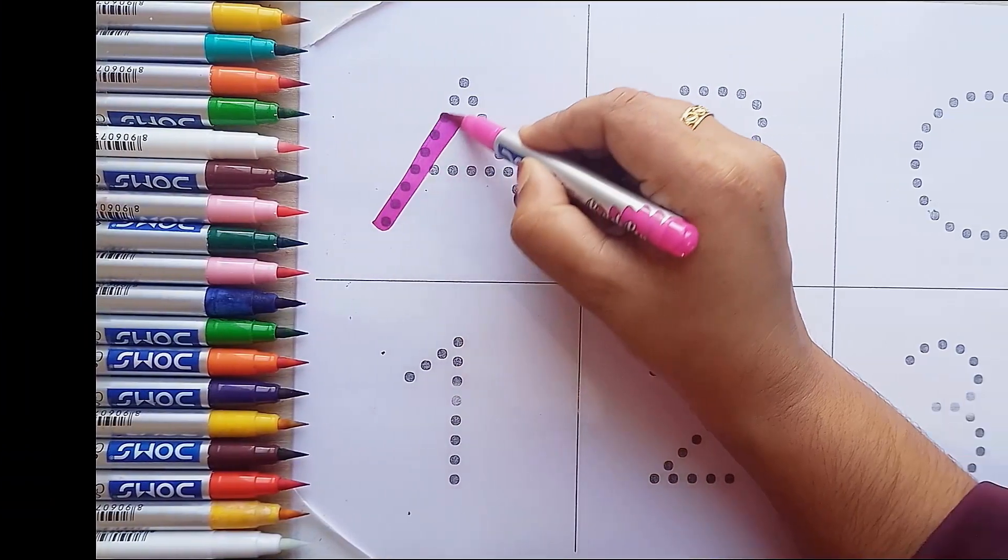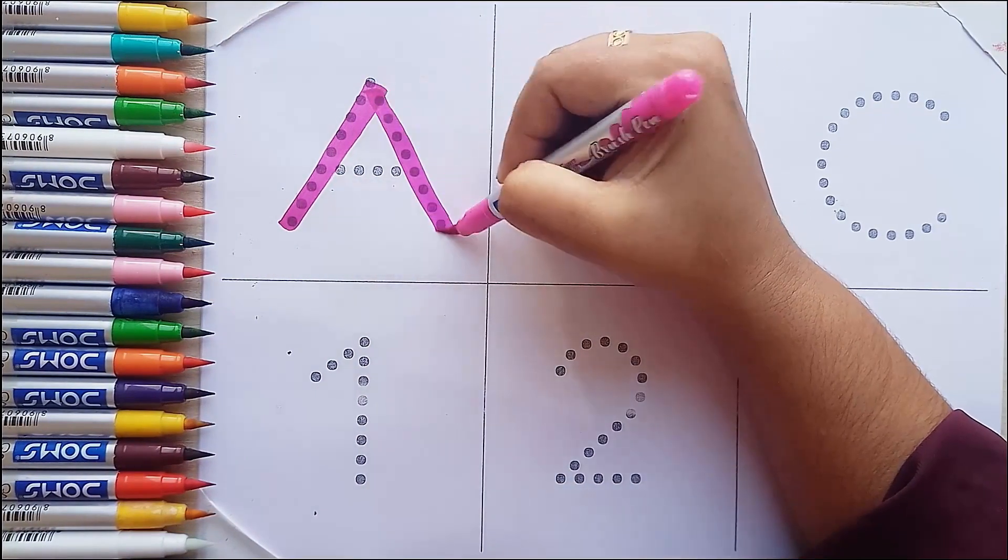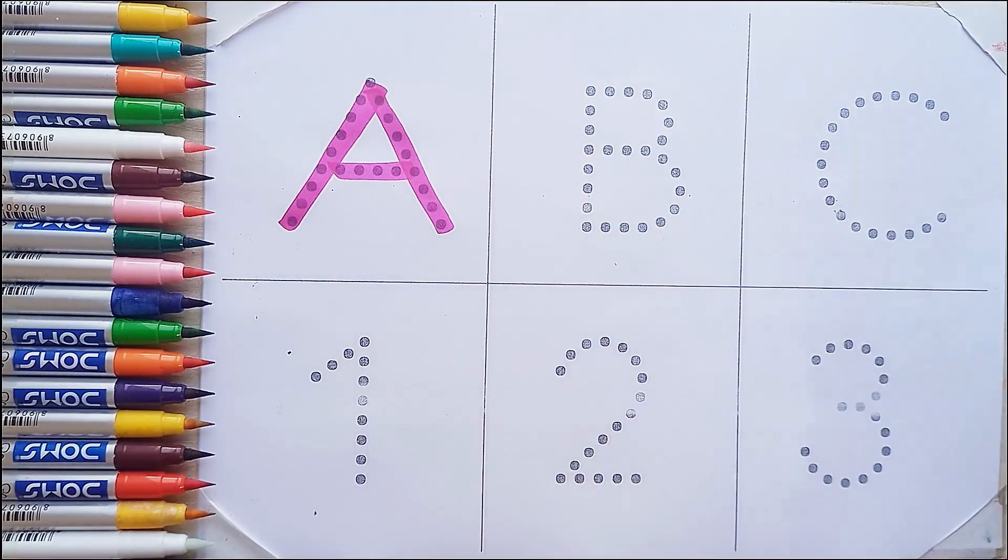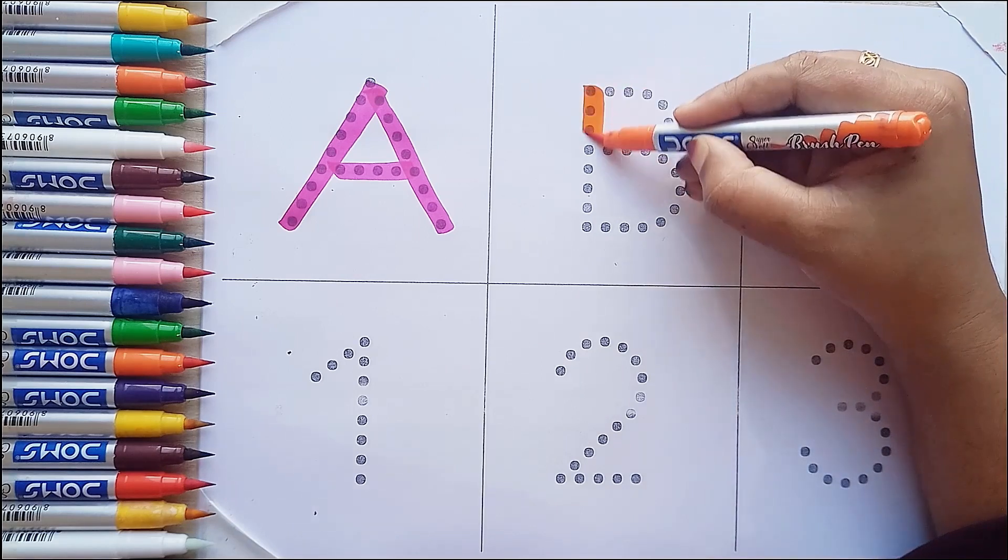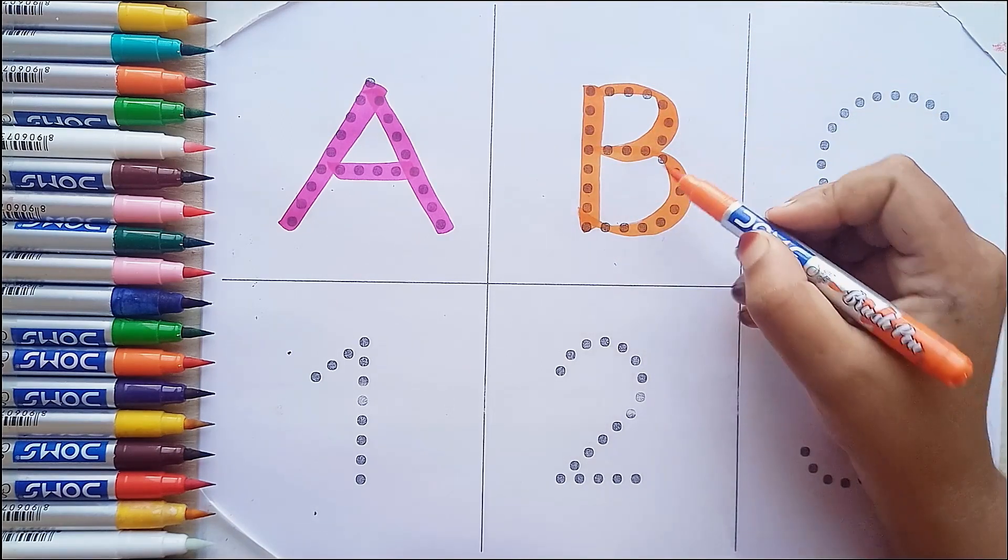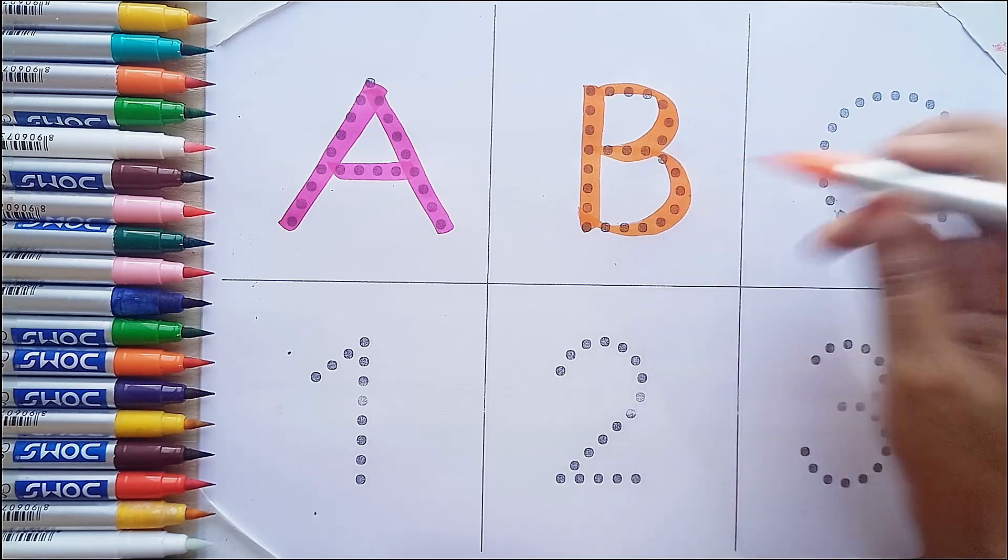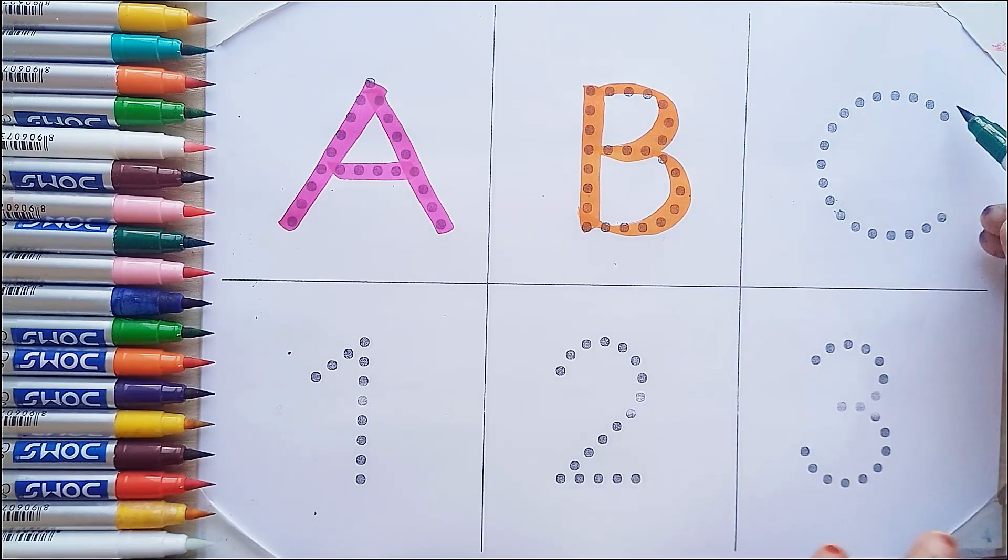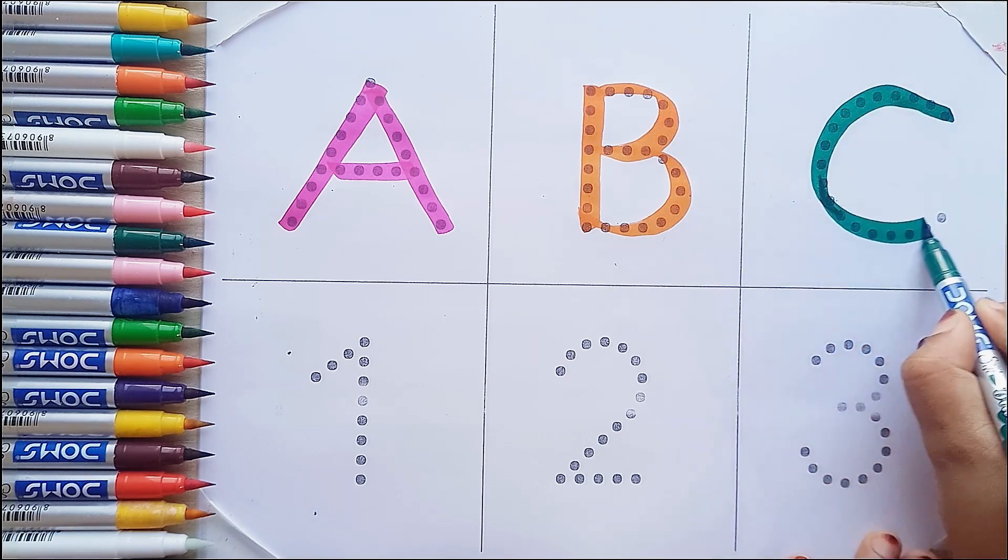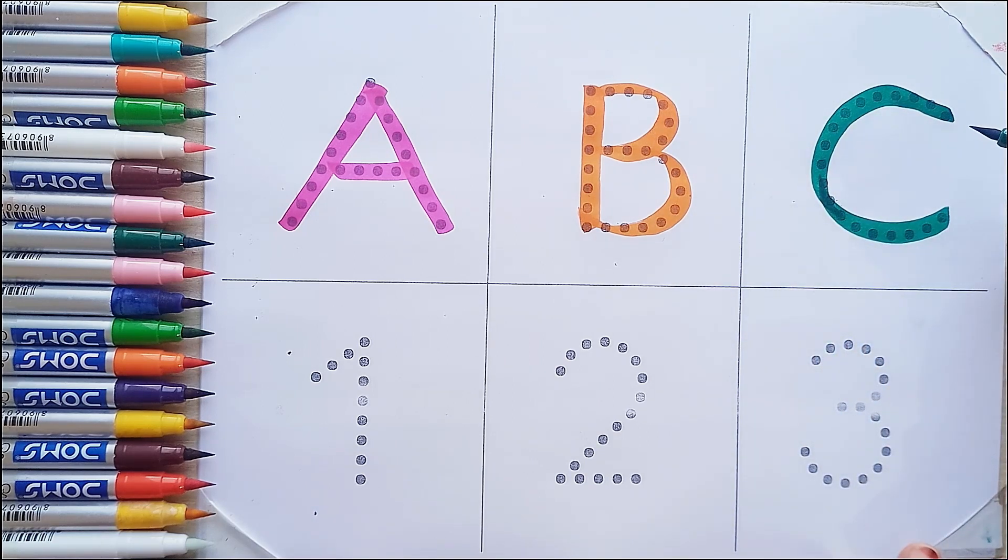Let's start. Pink color. A, A for airplane. Orange color. B, B for ball. Green color. C, C for probe.